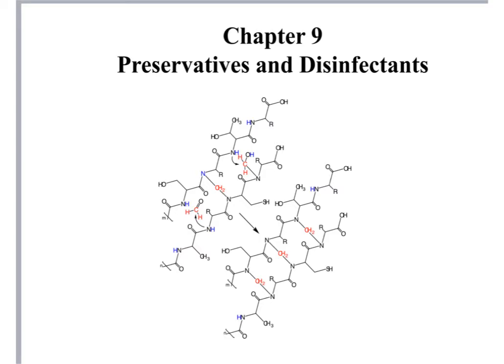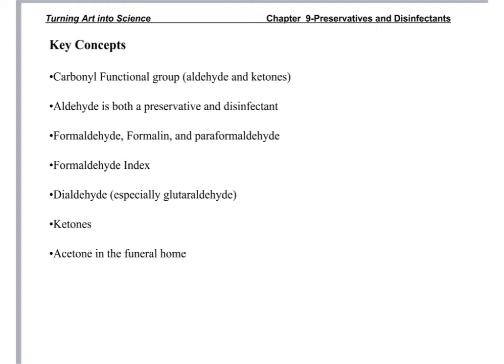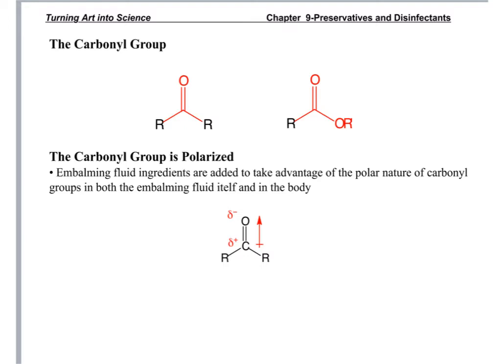Chapter 9: Preservatives and Disinfectants. Today we're going to look at the carbonyl functional group — two different types: aldehydes and ketones. Aldehydes are very useful, and ketones not so much in a funeral home setting. With the carbonyl group you've got a double-bonded oxygen coming off of carbon, where R can be an alkyl group or a hydrogen. For a ketone, instead of just an R group on the side, it's an oxygen attached to an R group.